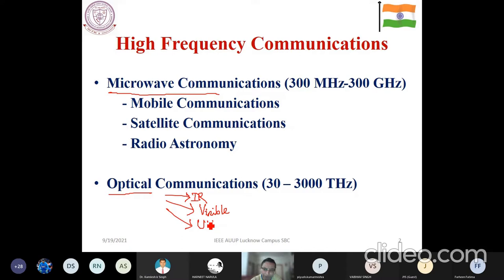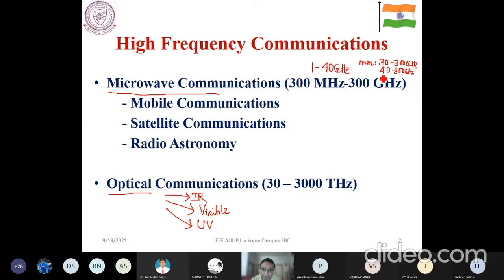The microwave range basically lies between 300 megahertz to 300 gigahertz, that is between one meter to one millimeter in wavelength. For conventional users of microwave frequency ranges we consider it from 1 to 40 gigahertz, over which the millimeter wave band comes into picture from 30 to 300 gigahertz, with operating wavelength between 1 millimeter to 10 millimeter. In between the two, we have a terahertz gap or terahertz window lying between 0.3 to 30 terahertz. I will come to some potential applications of this terahertz range very soon in this talk.